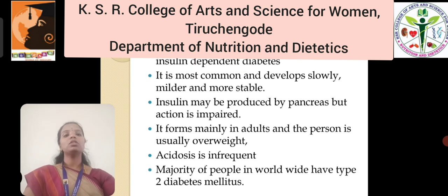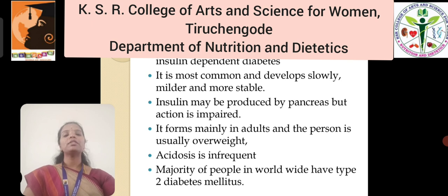Acidosis is fairly common in Type 1. Type 2 is also known as adult onset diabetes or non-insulin dependent diabetes mellitus. It is the most common type and develops slowly, milder and more stable. Insulin may be produced by the pancreas but the action is impaired. It forms mainly in adults and the person is usually overweight.